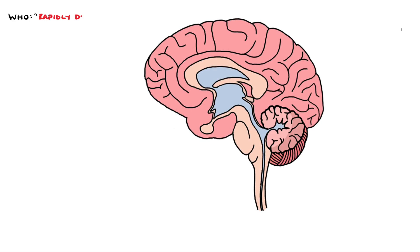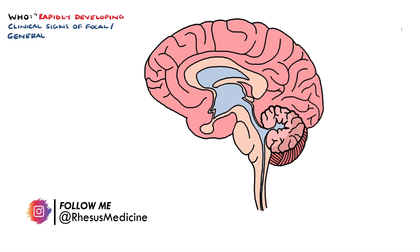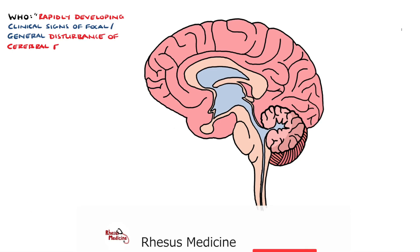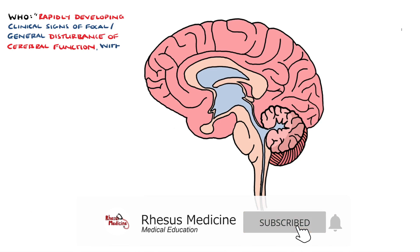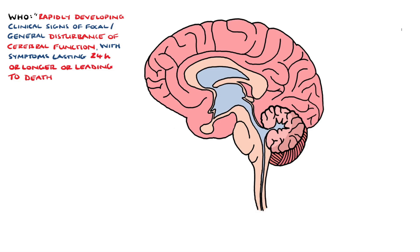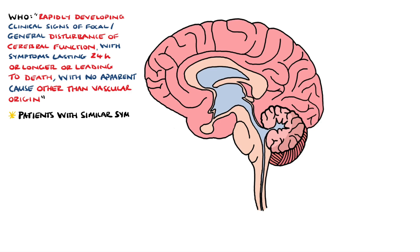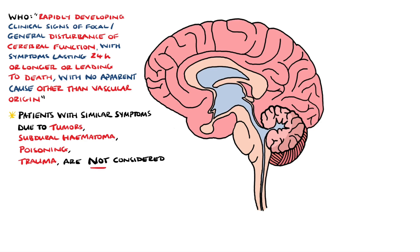The World Health Organization definition of stroke is rapidly developing clinical signs of focal or global disturbance of cerebral function, with symptoms lasting 24 hours or longer or leading to death, with no apparent cause other than a vascular origin. This means that patients with similar symptoms caused by other causes, such as tumors, subdural hematomas, poisoning, or trauma, are not considered strokes.